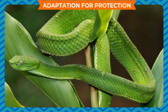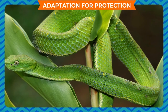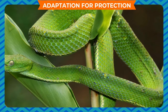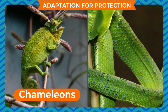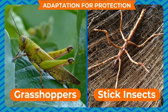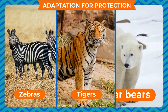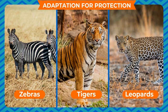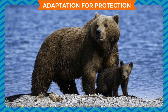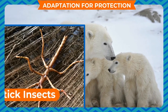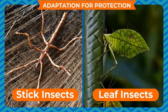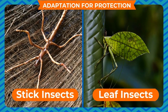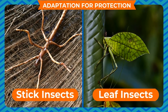The spots or stripes on the bodies of some animals help them to merge with their surroundings, which makes it difficult for their enemies to see them. This is called camouflage. Chameleons, stick insects, grasshoppers, polar bears, zebras, tigers, leopards, etc. are examples of such animals. Polar bears have brown coats in summer but white fur in winter. The stick insects and leaf insects look like a stick and a leaf respectively. Such animals cleverly merge with their surroundings and cannot be easily detected by their enemies.